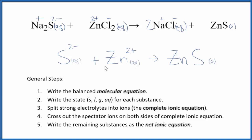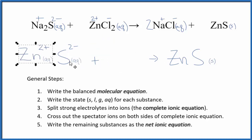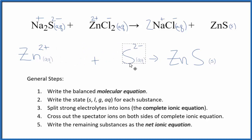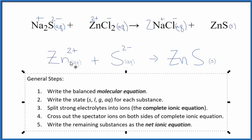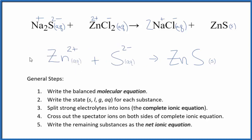Atoms are also balanced. Sometimes you'll see the positive ion written first — it doesn't really matter, it's the same equation. And that's it. This is the net ionic equation for sodium sulfide plus zinc chloride. And this is Dr. B — thanks for watching.